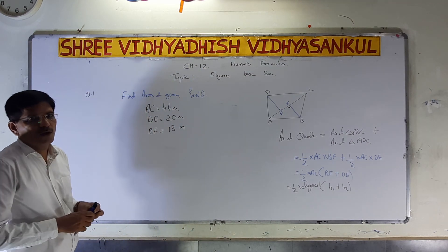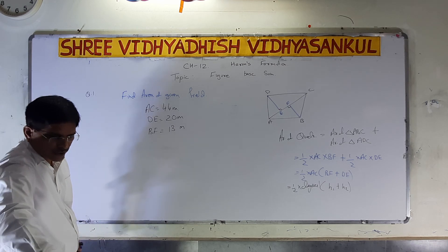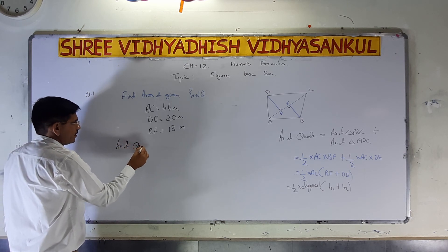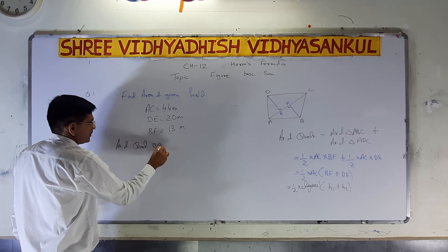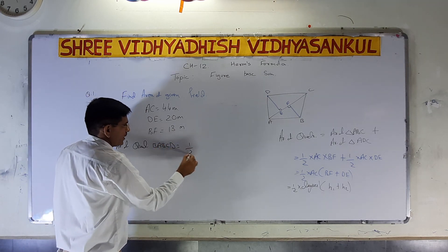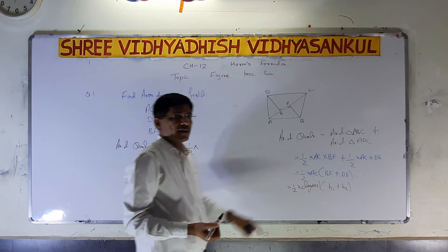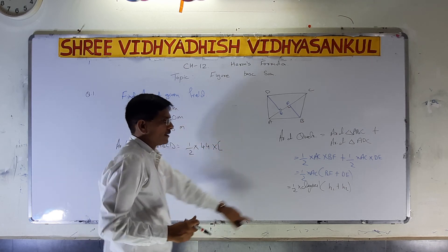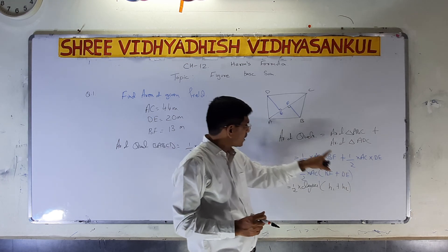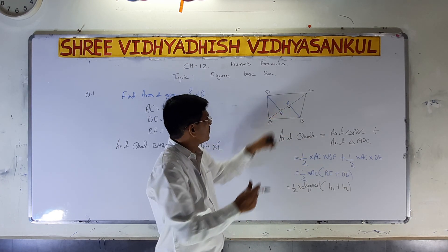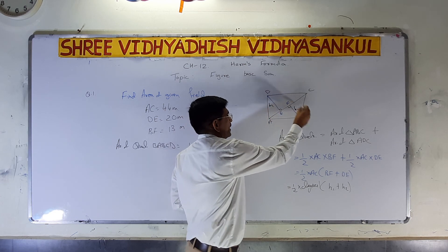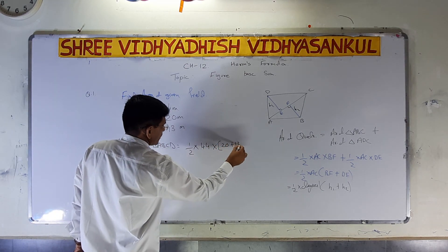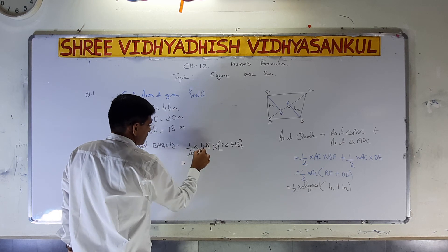Now we can find out the area of the quadrilateral. Area of quadrilateral ABCD is equal to half into diagonal, which is 44, in bracket, height H1 plus H2 — that is DE and BF. The values given are 20 and 30. So we have 20 plus 30.